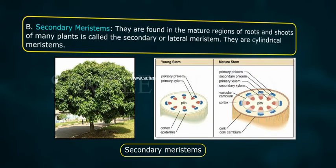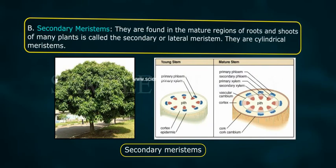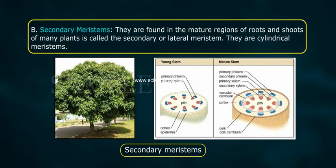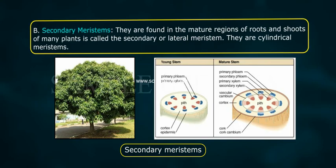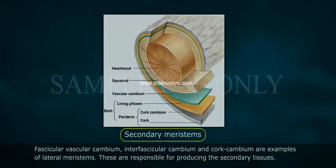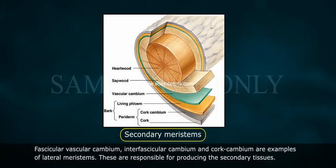Secondary meristems are found in the mature regions of roots and shoots of many plants, and are called the secondary or lateral meristem. They are cylindrical meristems. Fascicular vascular cambium, interfascicular cambium, and cork cambium are examples of lateral meristems. These are responsible for producing the secondary tissues.